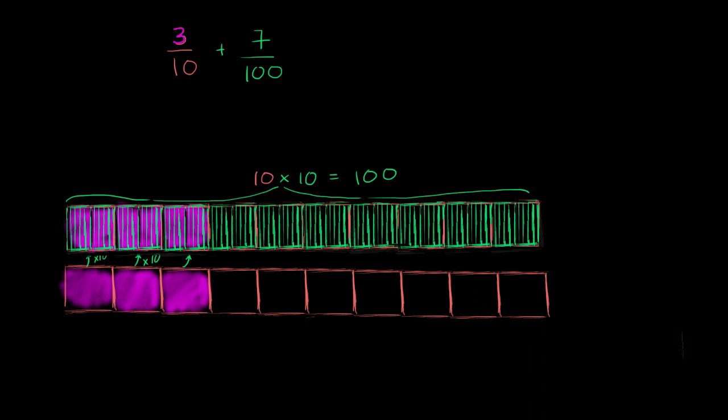So this part right over here is going to be 3 times 10, which is going to be equal to 30. 10 times 10 is equal to 100. So this is how we're going to change the denominator. Instead of thinking in terms of tenths, we're going to think in terms of hundredths. And now our numerator, 3 tenths is equivalent to 30 hundredths.